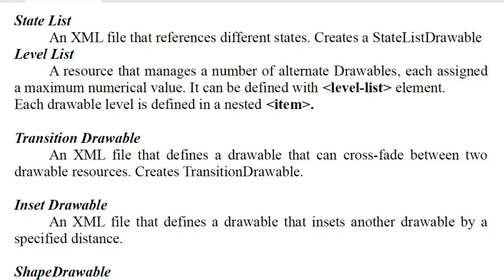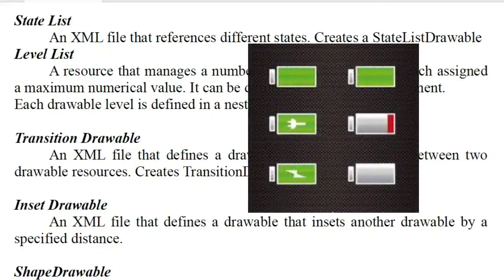The next drawable list is level list. For example, if you have a battery, you can use images for different levels — 100%, 70%, 50%, 10%, or empty. If you have a state change, you can include a group of images in the drawable.